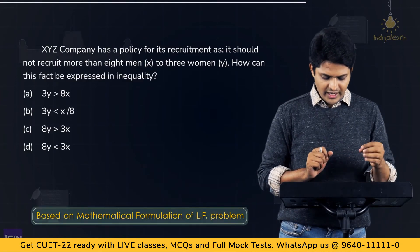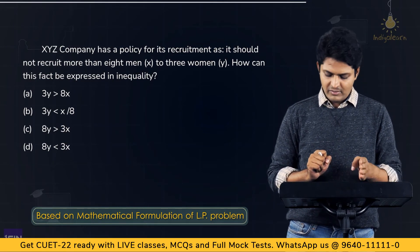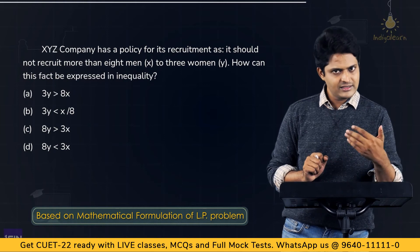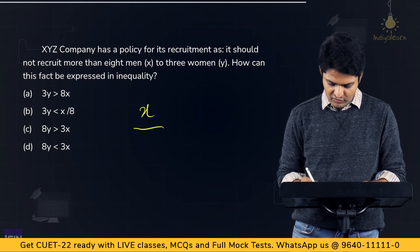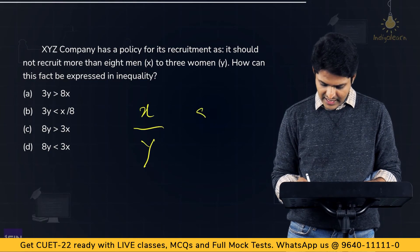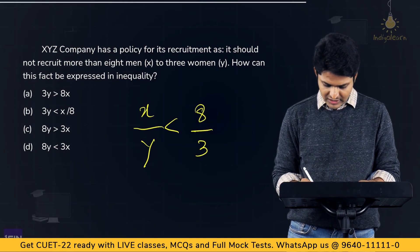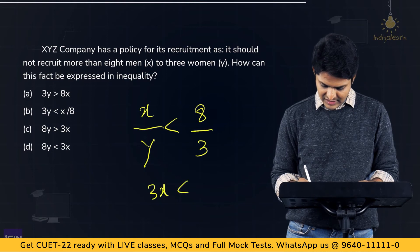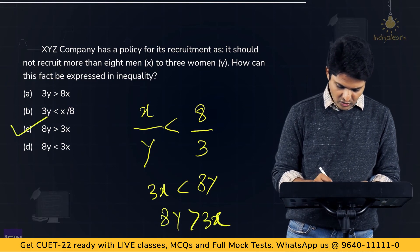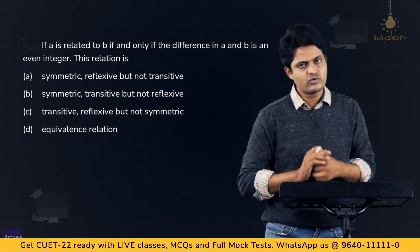Sample Question 1: XYZ company has a recruitment policy of not recruiting more than 8 men for every 3 women. If men are X and women are Y, express this as an inequality. Since it says 'not more than,' X/Y < 8/3. Cross-multiplying gives 3X < 8Y, or equivalently 8Y > 3X, which is option C.